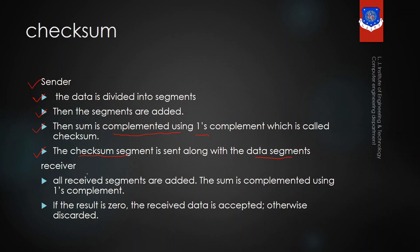Now at the receiver side, these two steps will be followed. All the segments that are received — the data segment and the checksum segment — will be added at the receiver side. After adding those segments, the receiver will perform the one's complement. And after performing the one's complement, if the result is zero, it means that the received data has no error.